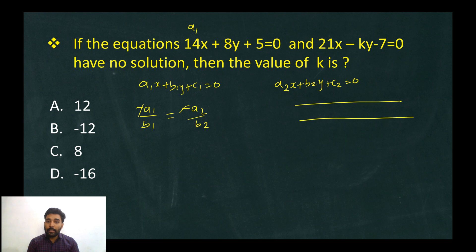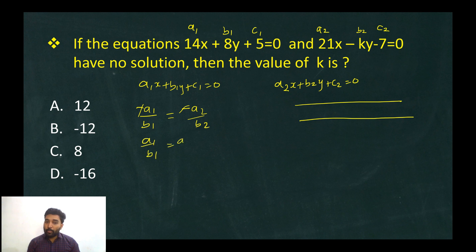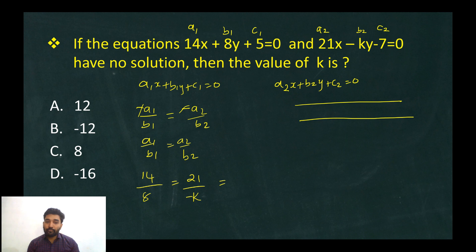In the first equation, a1 is 14 and b1 is 8. In the second equation, a2 is 21 and b2 is minus k. Setting a1 times b2 equal to a2 times b1: 14 times minus k equals 21 times 8, so k equals 21 times 8 divided by minus 14.